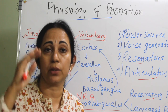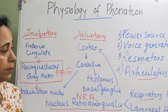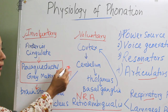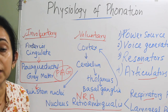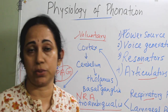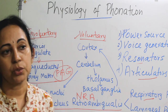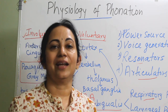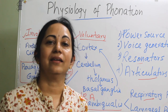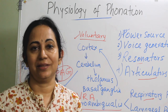Voluntary phonation is controlled by the cortical centers, while involuntary sounds — emotional sounds — are mainly controlled by the periaqueductal grey matter. These are the main four components of voice production. This is, in a nutshell, the physiology of phonation. Thank you.